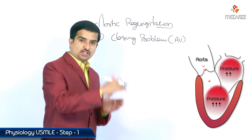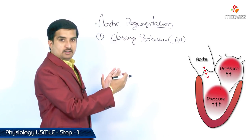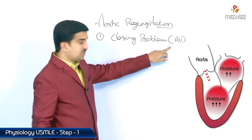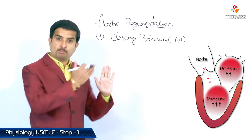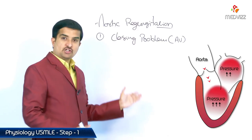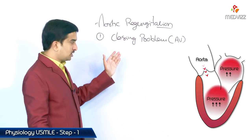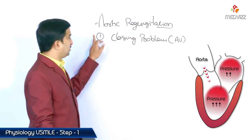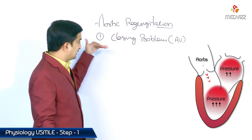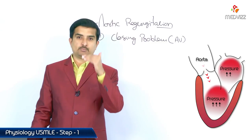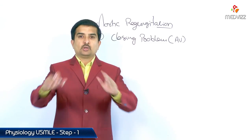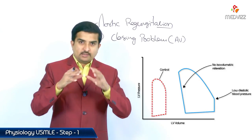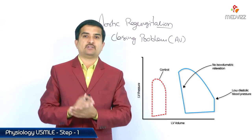After blood is ejected into the aorta, the semilunar valve closes. If the aortic valve is not closing properly, there is regurgitation of blood from the aorta back to the left ventricle — this is called aortic regurgitation. Because of this closing problem, there is no isovolumetric relaxation.